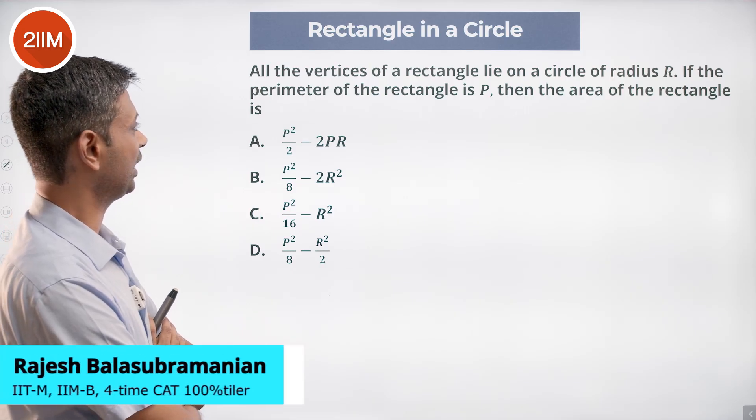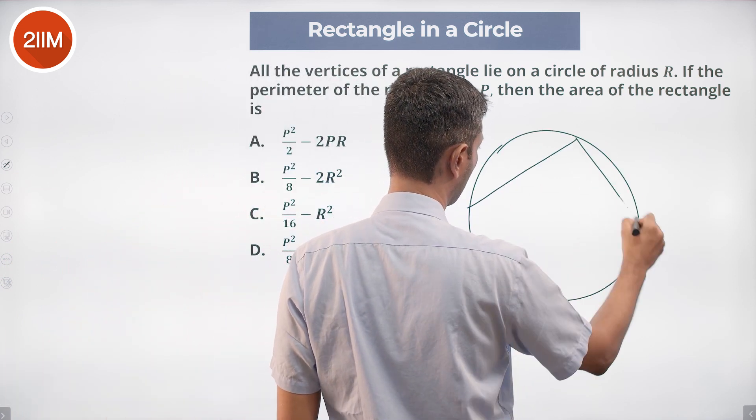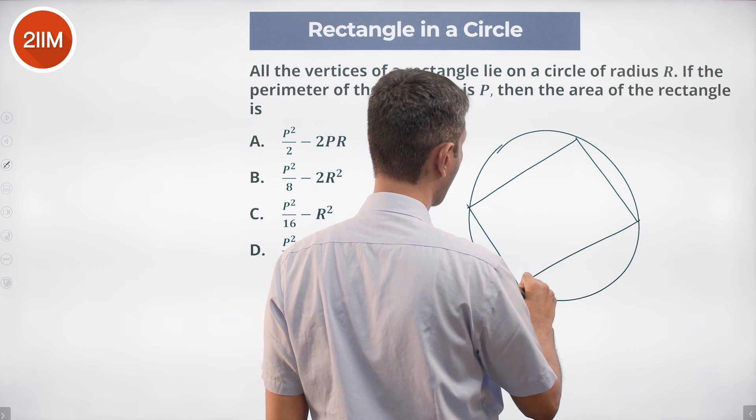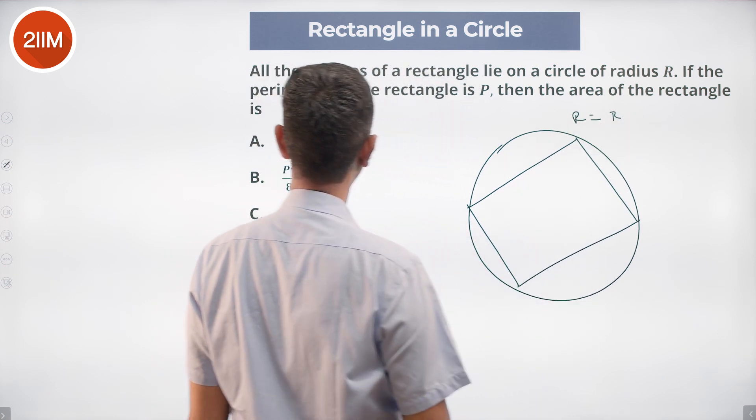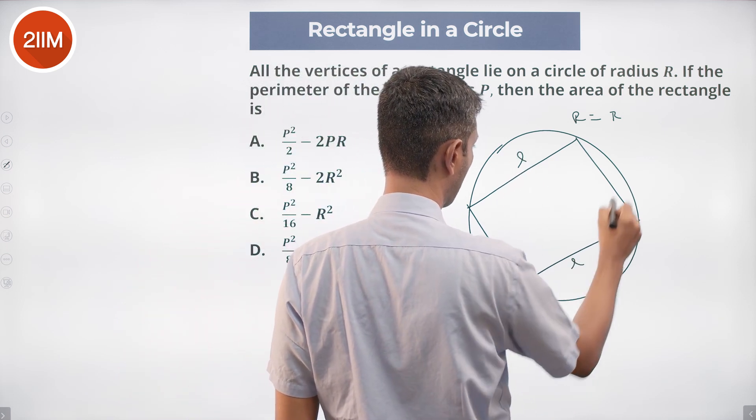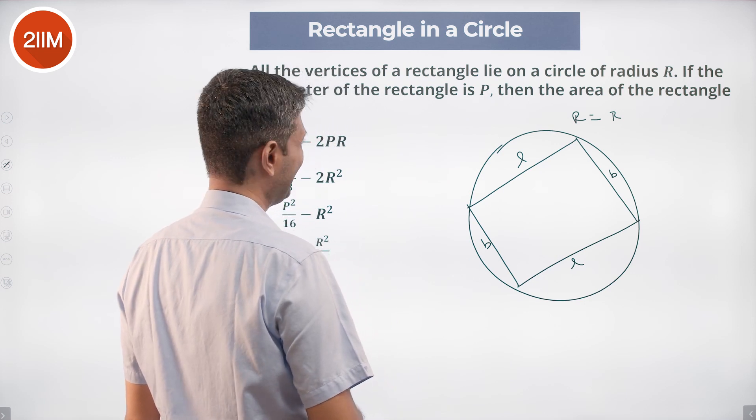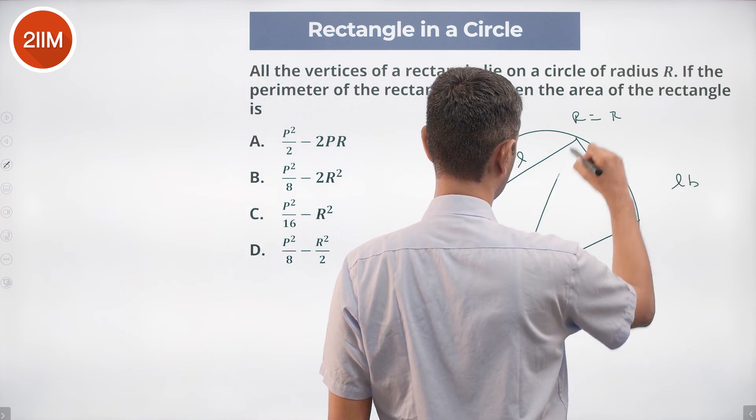If all the vertices of a rectangle lie on a circle of radius R, and if the perimeter of the rectangle is P, then we need to find the area of the rectangle. We need to find L times B. We know this is the rectangle, and the diagonal...